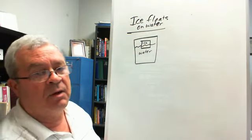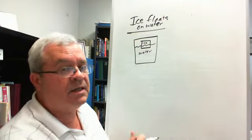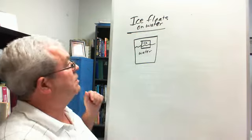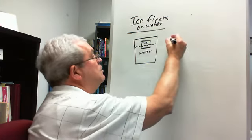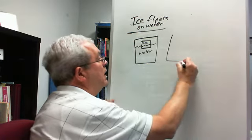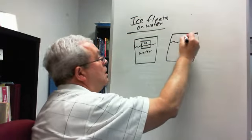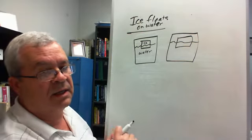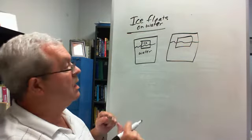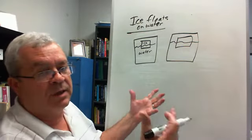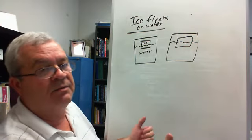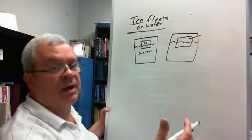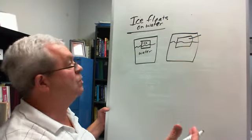Let's talk briefly about the reason anything floats on anything else. Of course, one thing has to be a liquid for something to float on it, but the reason something floats on something else has to do with something called density, how compact something is, how packed in it is. For example, lead is more dense than a bag of feathers. It's more compact and there's a way of measuring it in mass per unit volume and so forth.